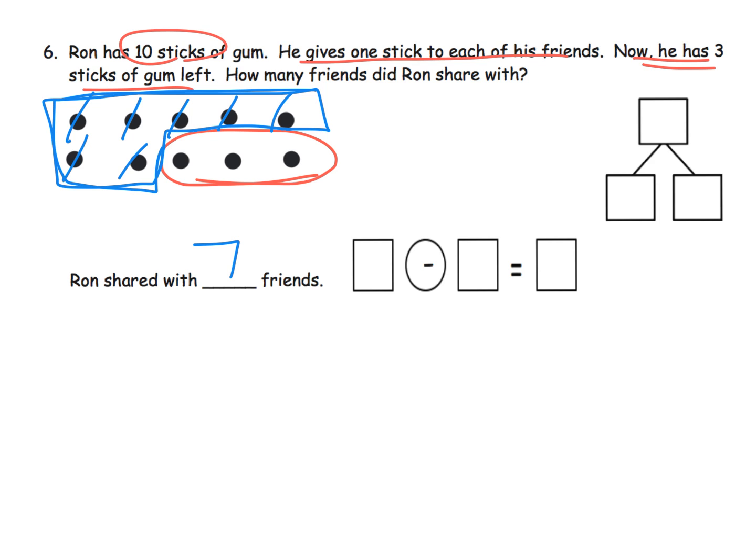And we see that we crossed off 7, so he shared with 7 friends. I'm kind of going out of order, aren't I? A little bit. And that's okay too. So our number bond, 10 is our whole, 3 is the part that we know, and 7 is the part that we needed to figure out. And so the number sentence right here would be 10 take away 3 equals 7.